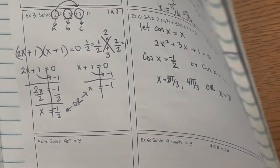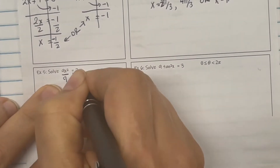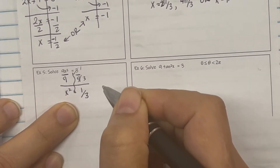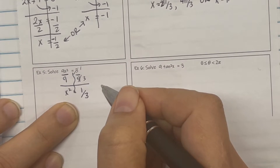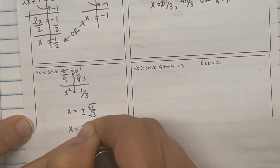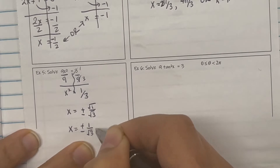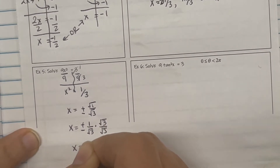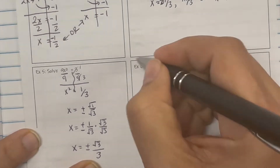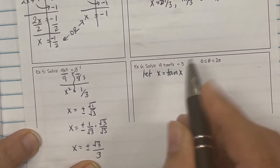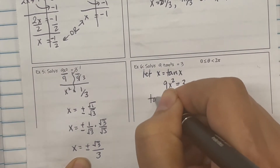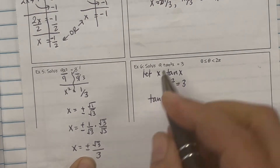Let's take a look at one more example. This is a listening check — color example 5. Solving: divide by 9, so x squared equals 1 over 3. Take the square root of both sides — you get plus or minus the square root of the numerator over the square root of the denominator, which is plus or minus 1 over radical 3. You can't have a radical on the bottom, so rationalize it — multiply top and bottom by radical 3. That gives radical 3 over 3. So let x equal tan x.